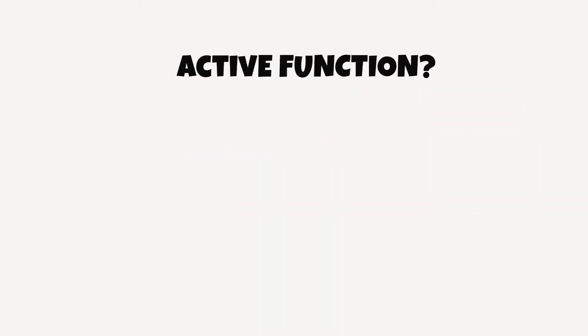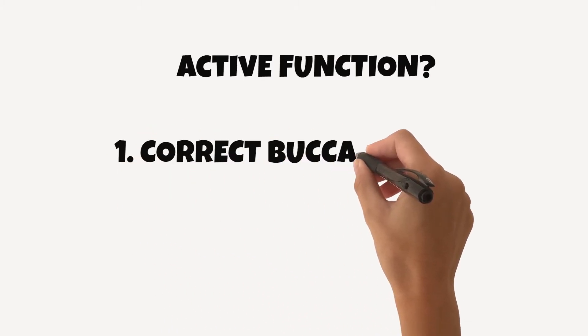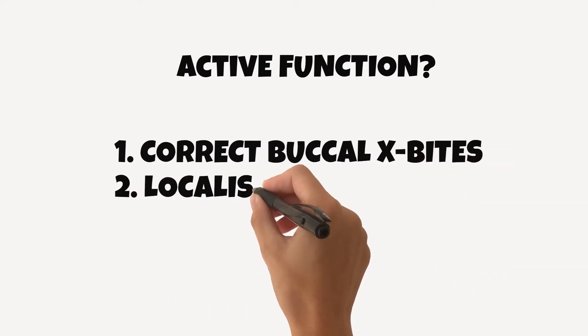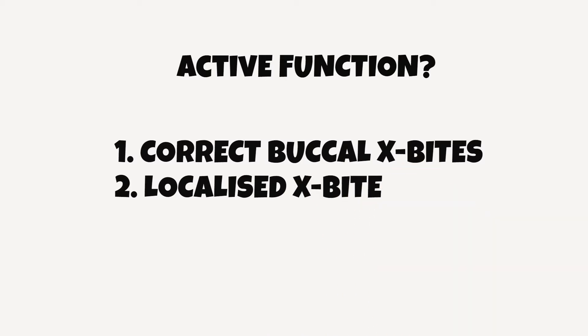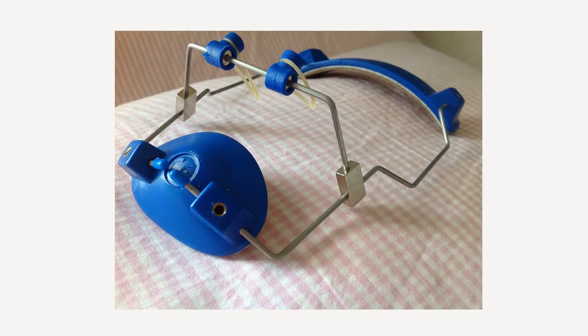The active role of removable appliances is that they allow movements of blocks of teeth — for example, during the correction of a buccal crossbite by upper arch expansion using a midline screw. They can also correct localised crossbites such as a correction of an upper incisor, lead to overbite reduction by the utilisation of anterior bite planes, and can be used in conjunction with other appliances such as headgear to facilitate the distalisation of upper molars. They can also be used for elimination of occlusal interferences.